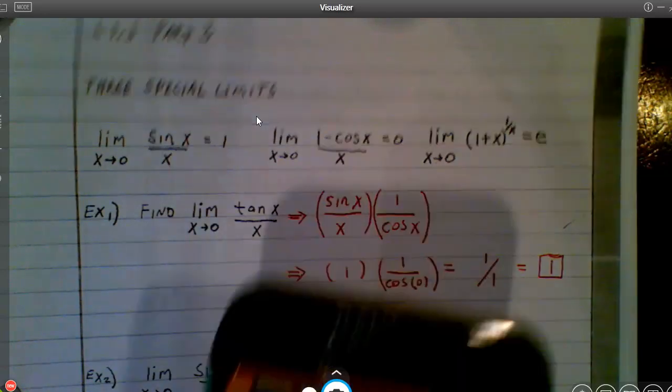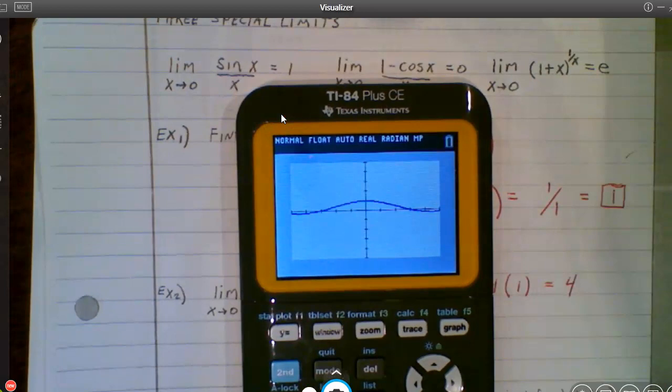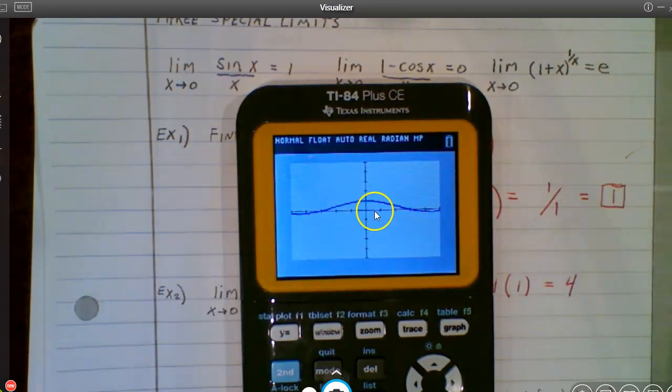So if you take a look at what the graph would look like for this, let me just show you. You can see real clear on this how as x approaches zero from both sides, I'm hitting that value of one for the y value. So that's where this guy comes from.